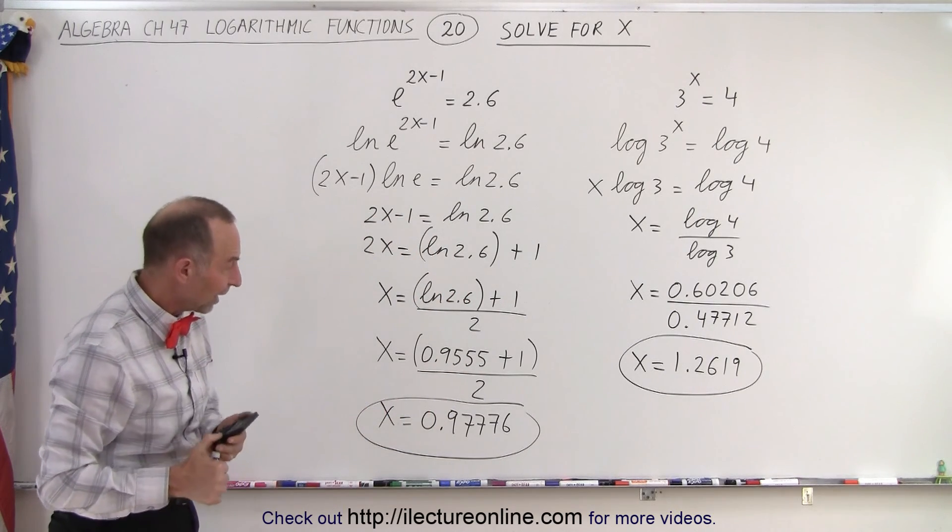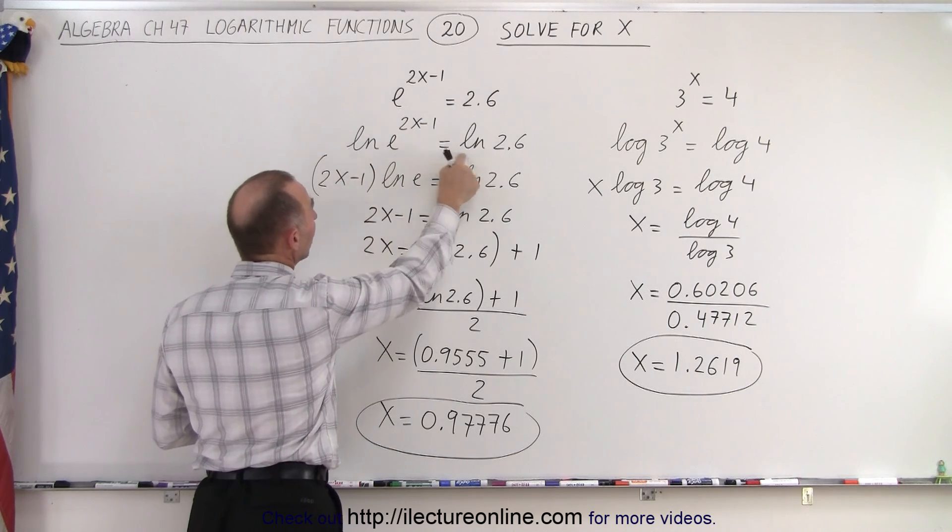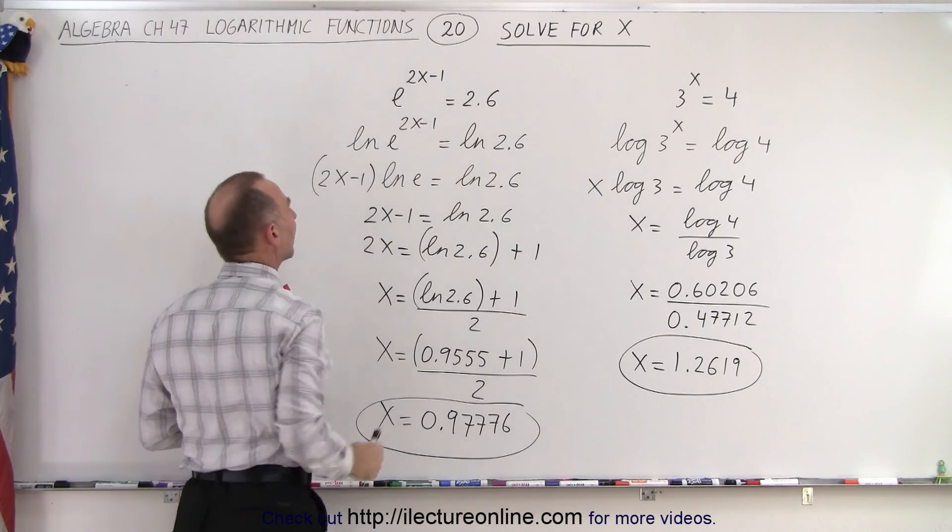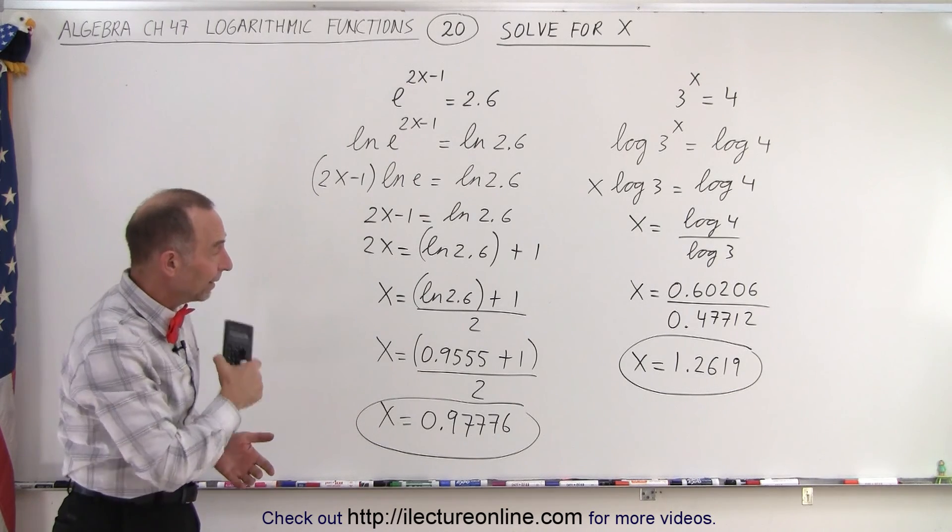And that's how we find the value for x. The trick is to take the log of both sides, specifically the natural log because the base is e. That's the best choice, and that is how it's done.